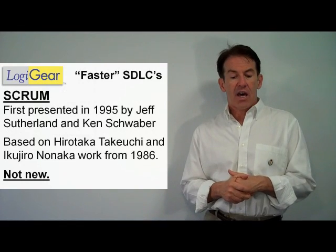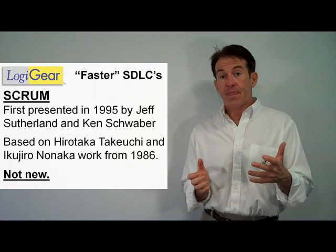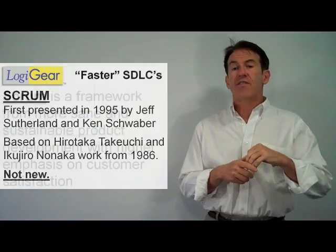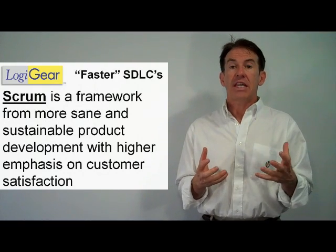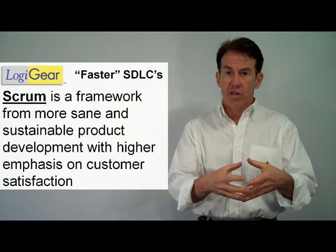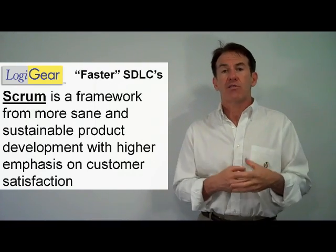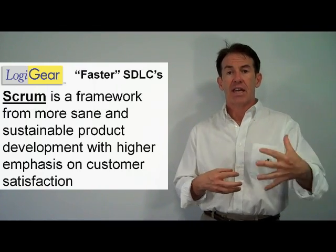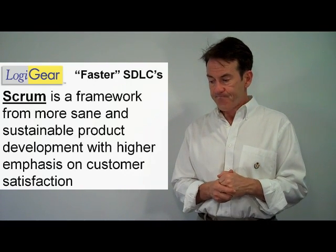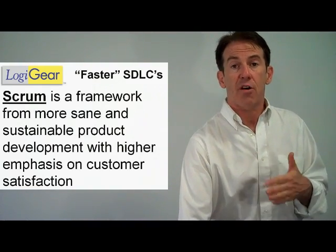Scrum was first presented in 1995 by Jeff Sutherland and Ken Schwaber — it's not new. It's actually based on some publications from 1986. Scrum is a framework for how to make teams work better together, work at a more sustainable pace, manage work better, and work more incrementally toward a single focused goal. Scrum is really focused on how people interact with each other, how they talk to each other, how they share, how they get work done, and the work environment. It's not about how you write software. Scrum is really about how you manage projects.